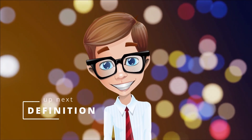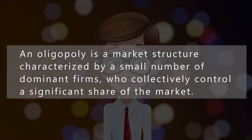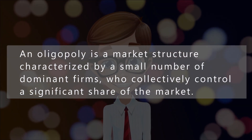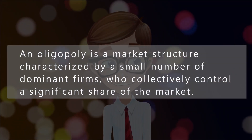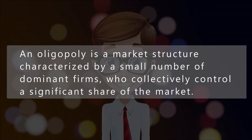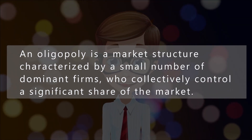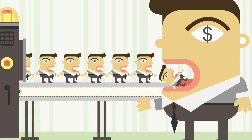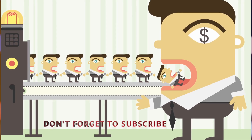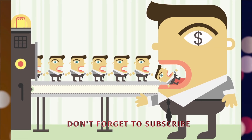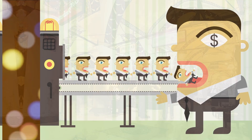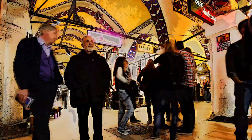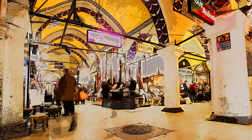First of all, what is an oligopoly? An oligopoly is a market structure characterized by a small number of dominant firms who collectively control a significant share of a market. This is in contrast to a monopoly where a single firm controls the entire market, or a perfectly competitive market where there are many small firms and no barriers to entry.